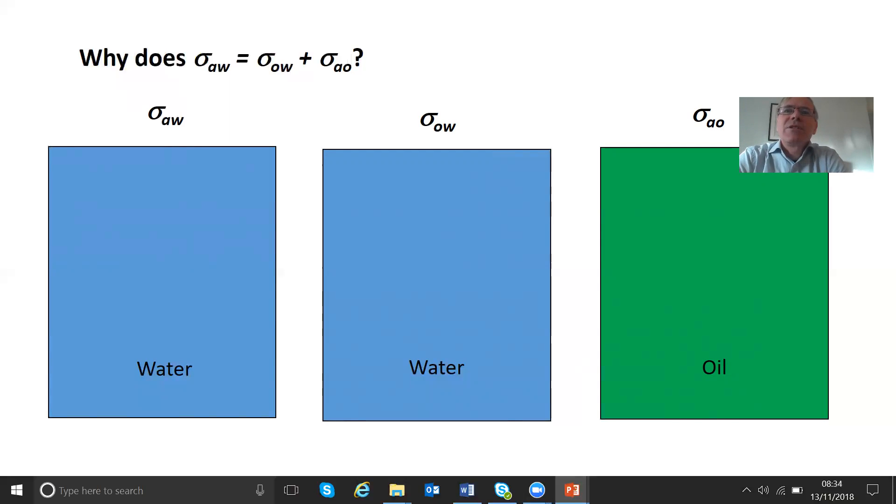Why are those interfacial tensions the same? So here we have the three. I'm just going to go through a little slideshow to show that. So when you have air-water, what you've done is you've broken half of the hydrogen bonding. There's virtually no interaction between the air and the water. It's very similar to what it would be. So that's a high energy. We know about that.